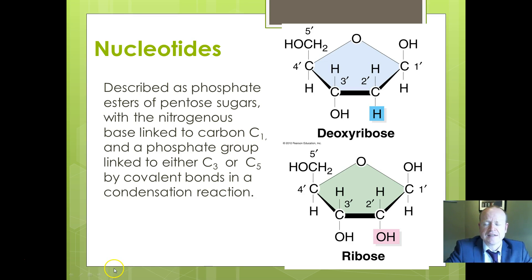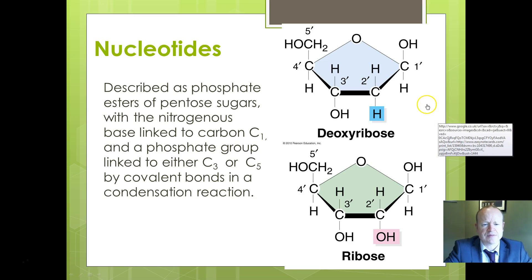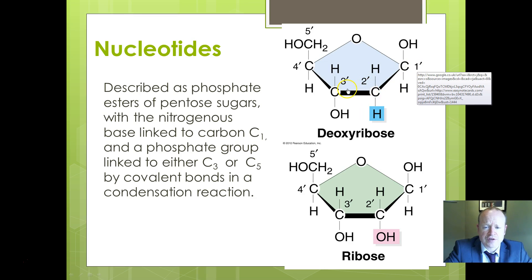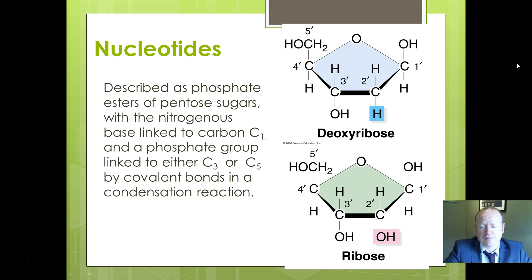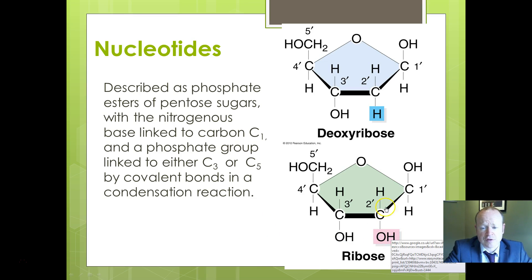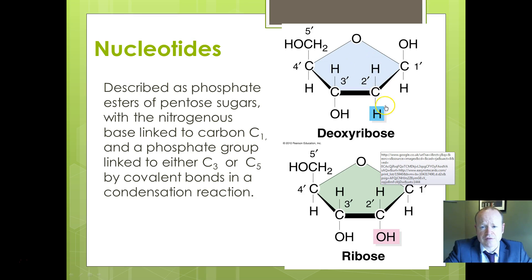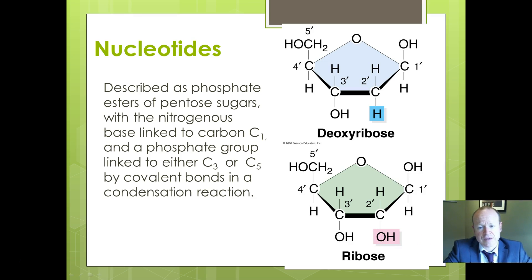Here are the two sugars. Deoxyribose is a pentose sugar with carbon 1, 2, 3, 4, and carbon 5, which is not in the ring but on the edge — still a five-carbon sugar. With ribose, it's more or less the same structure with carbons 1 through 5 in a ring. The subtle difference is that ribose has a hydroxyl group and a hydrogen at carbon 2, whereas deoxyribose has hydrogen and hydrogen — less oxygen, hence 'deoxy' ribose.